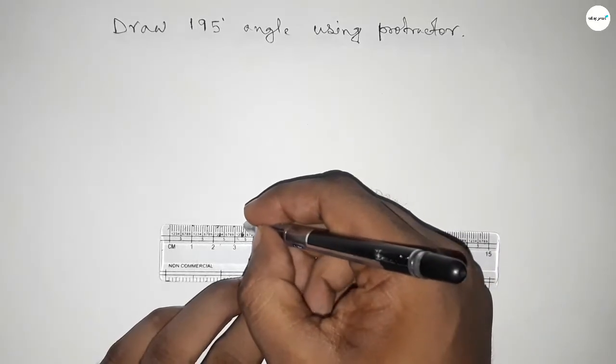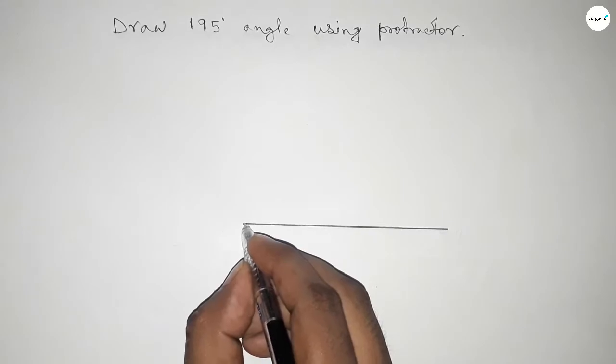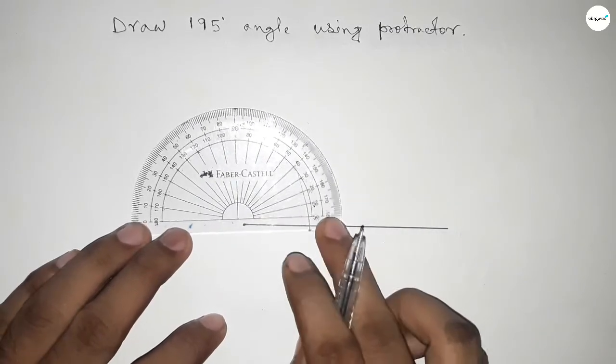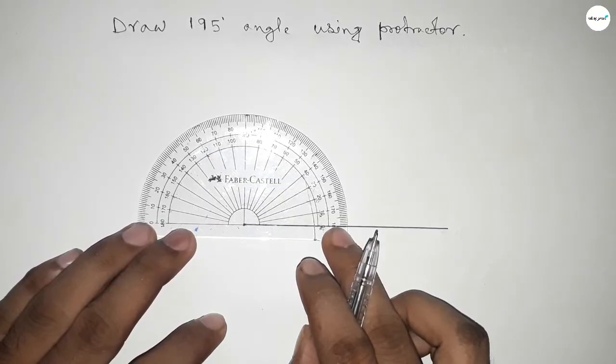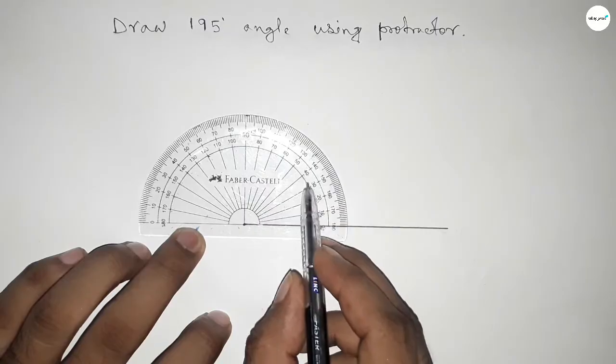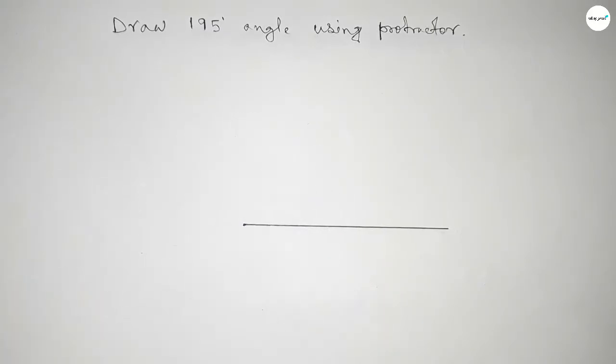Next, pointing here to draw a 195 degree angle. So first we have to count 180 degrees, putting the compass by this way. After this is 180, but we have to find 195 degrees.